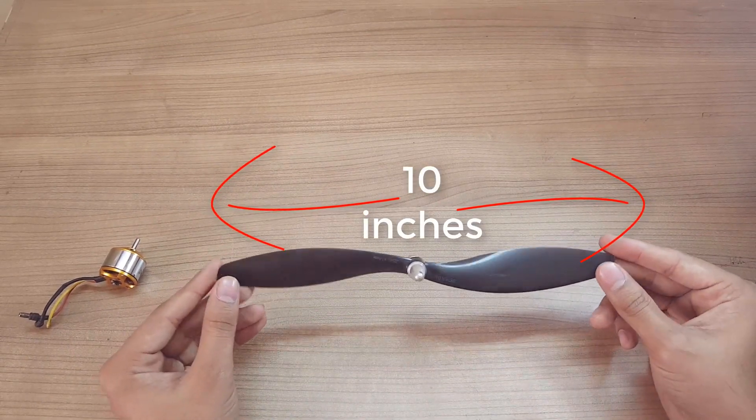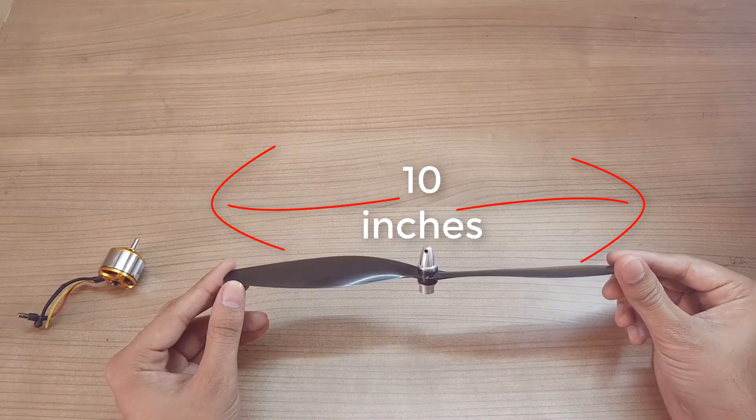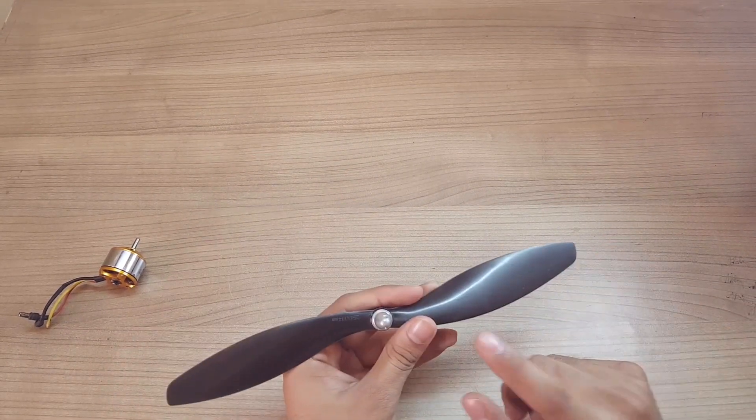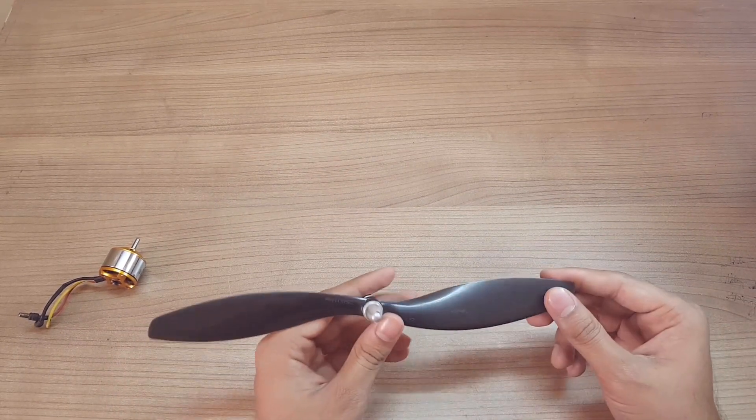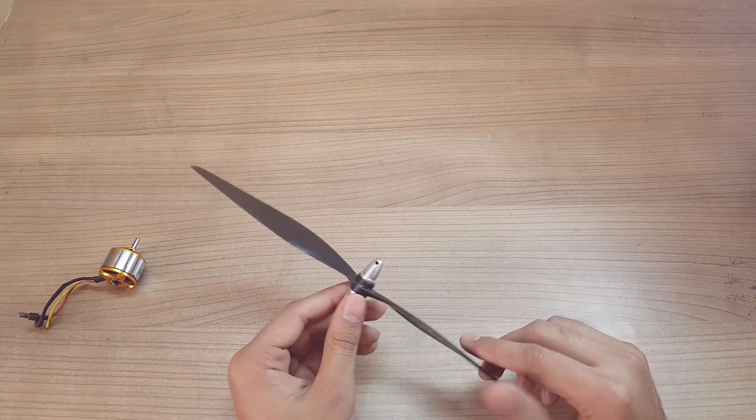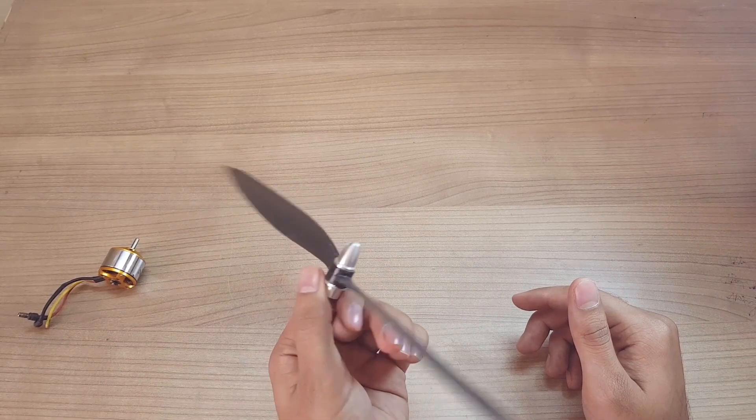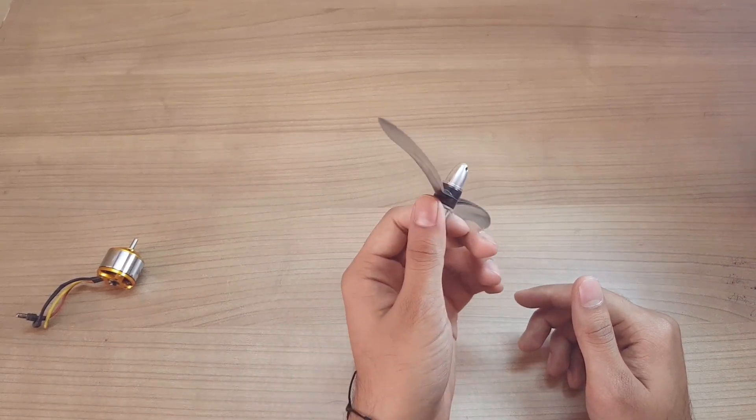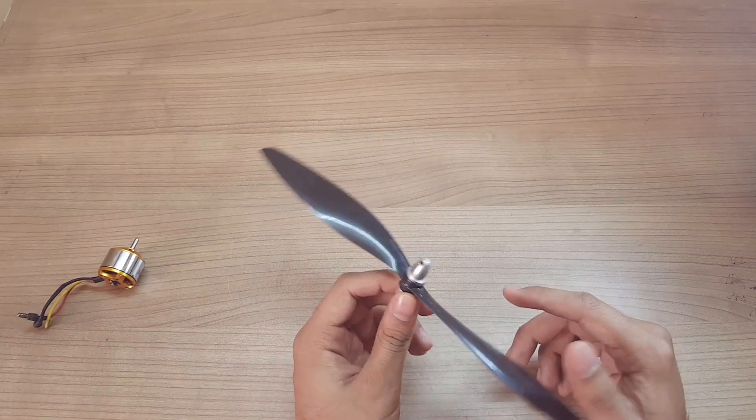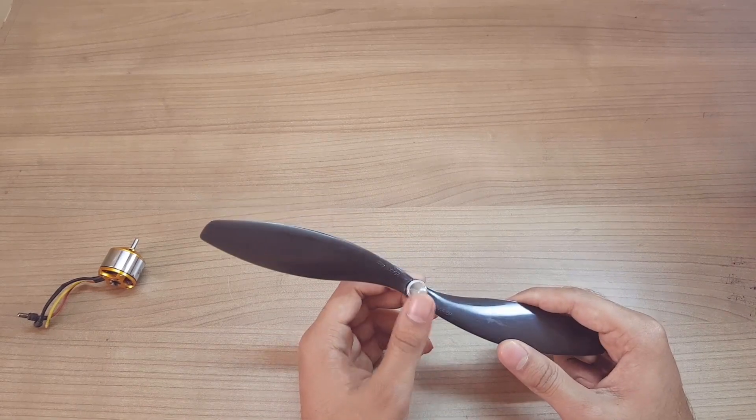4.5 pitch means the distance it's gonna cover in a 360-degree revolution. In one revolution, how much distance it's gonna move forward is known as pitch. So it's 4.5 inches.